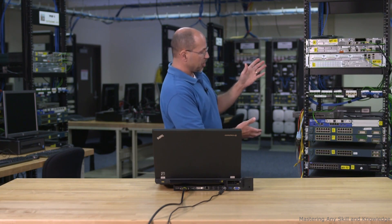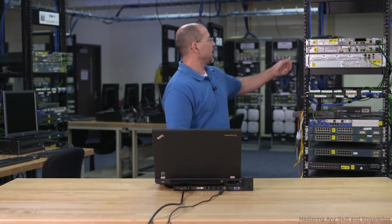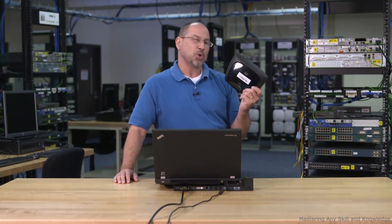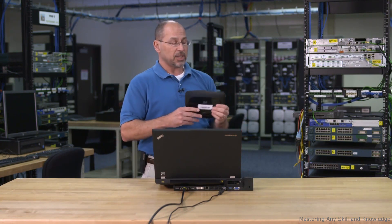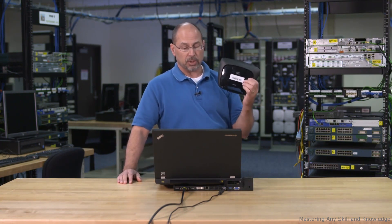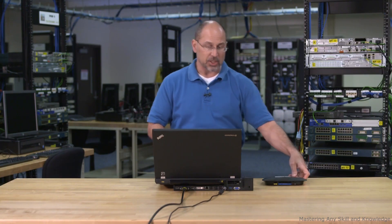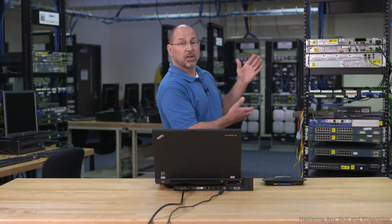That might seem a little scary because this is production gear and you might not be real familiar with it. So because of that, we're going to start our conversation with something a little more familiar, the wireless home gateway. This guy is not quite as powerful as some of its big brothers over there, but it does have a lot of functionality built right in. It's got switch ports, it has a routing function, it even does a little bit of firewalling, and of course it's wireless — so it encompasses a lot of the stuff that we see in a rack like this.